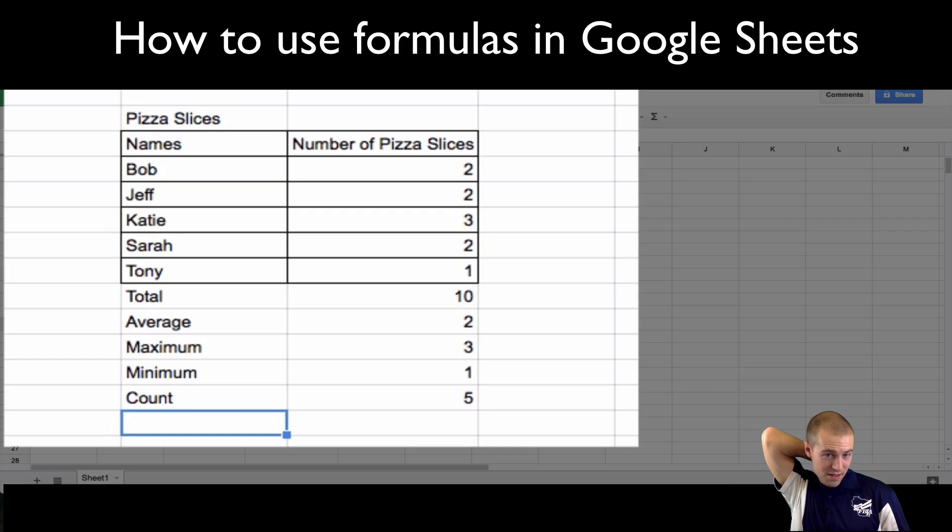So it's a little different than sum, because count is just going to count the amount of people involved. So right now, if we counted this, and we have Bob, Jeff, Katie, Sarah, and Tony, that's five people, and that's what count's going to show us. Count's going to say, hey, you have five different data values here.